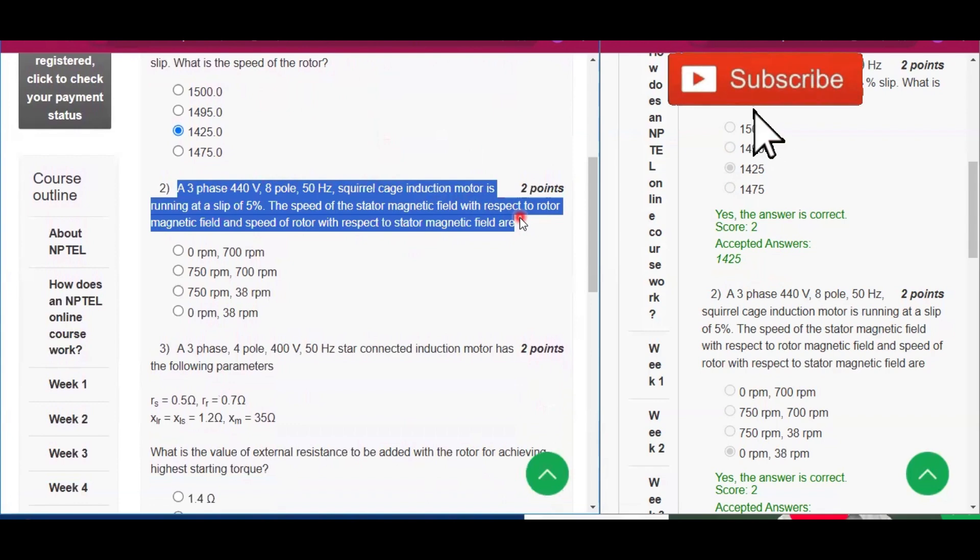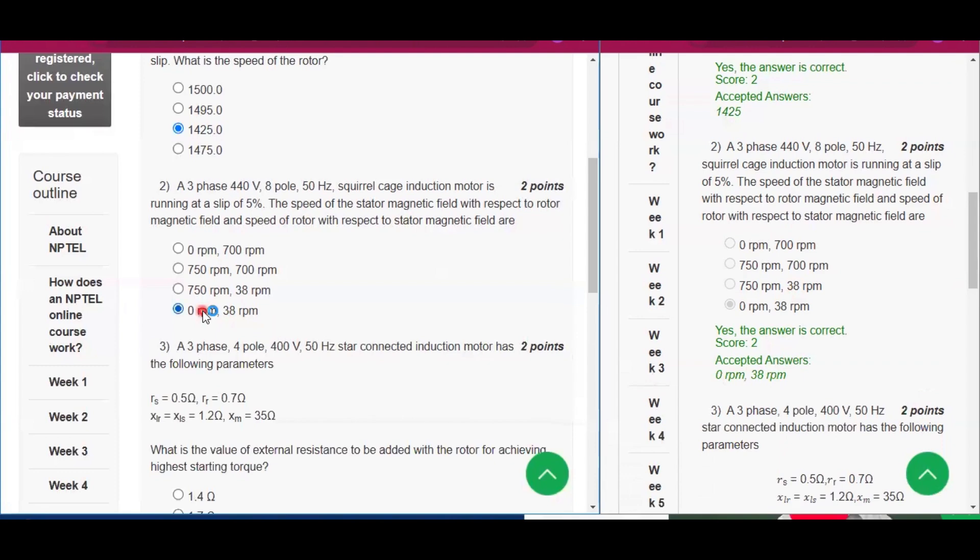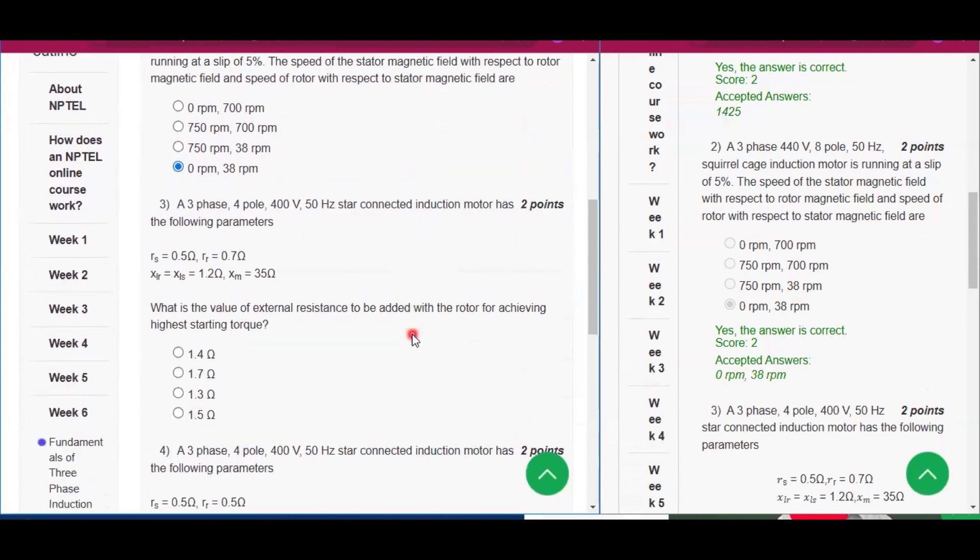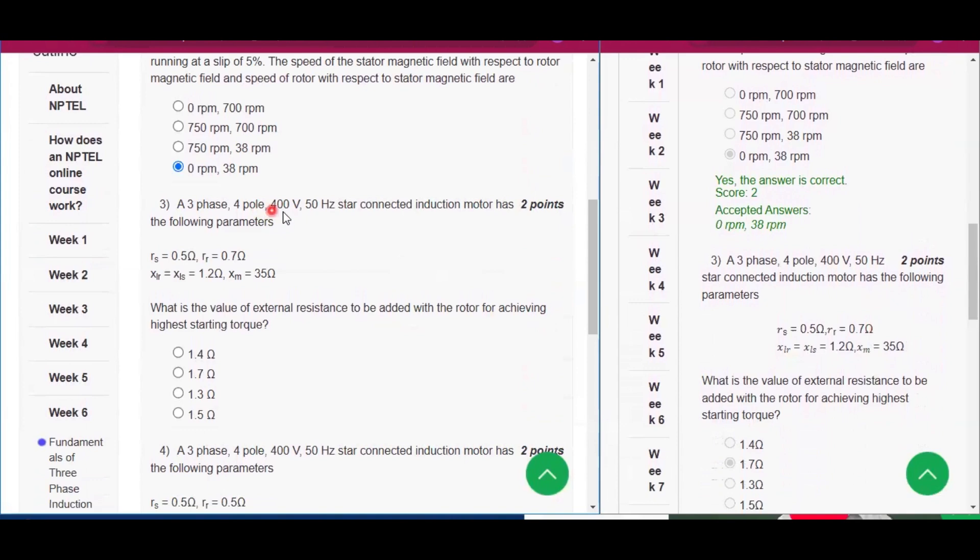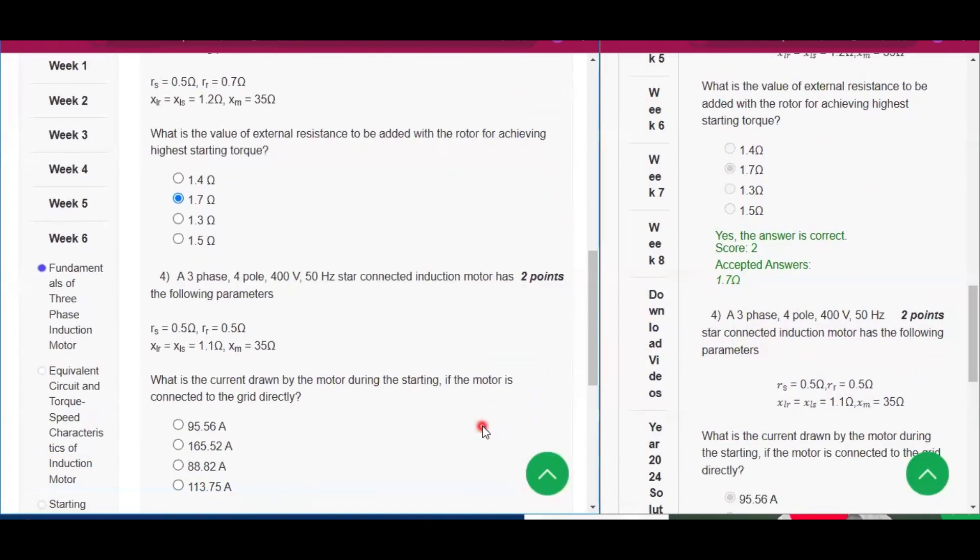Now the third question: A three-phase four-pole 400 volt 50 hertz star connected induction motor has the following parameters: Rs equals 0.5 ohm, Rr 0.7 ohm, Xlr and Xls equals 1.2 ohm, Xm equals 35 ohm. So the answer will be 1.7 ohm.